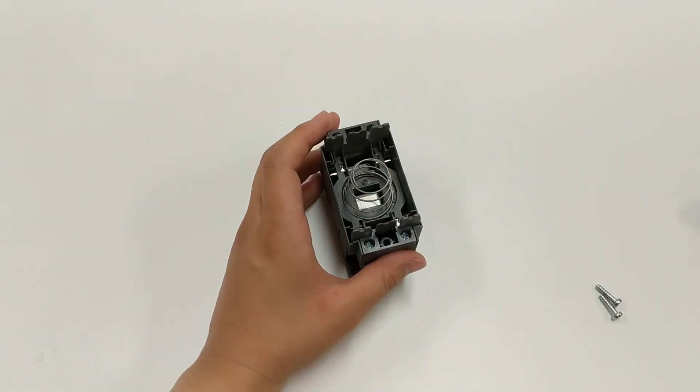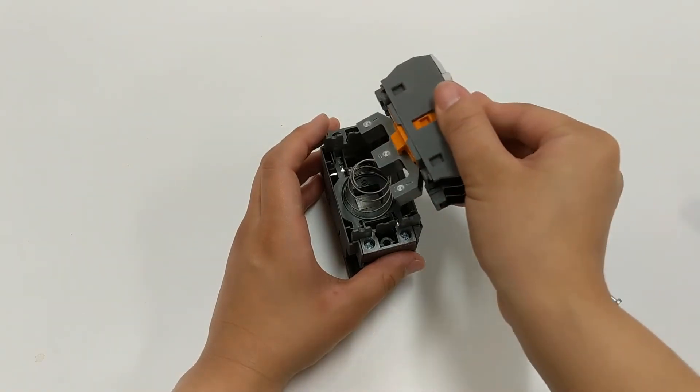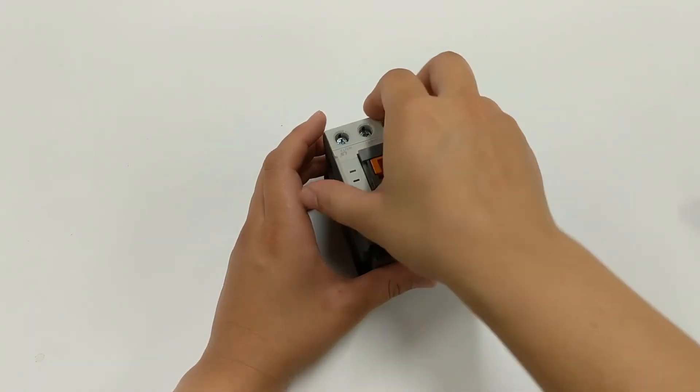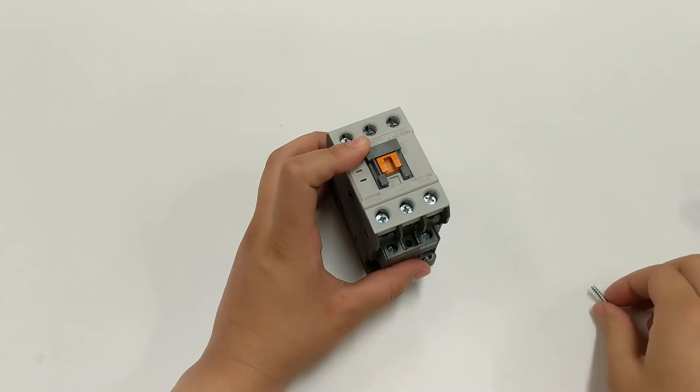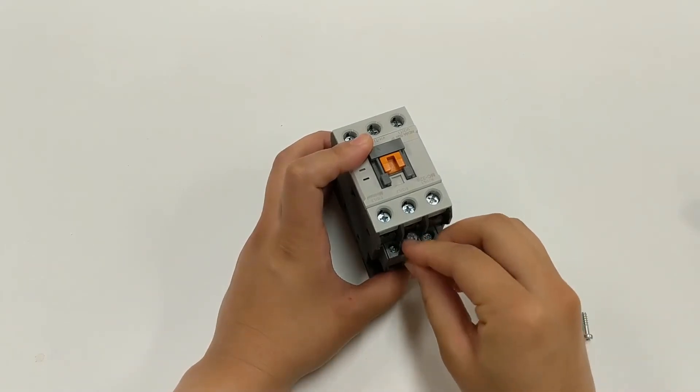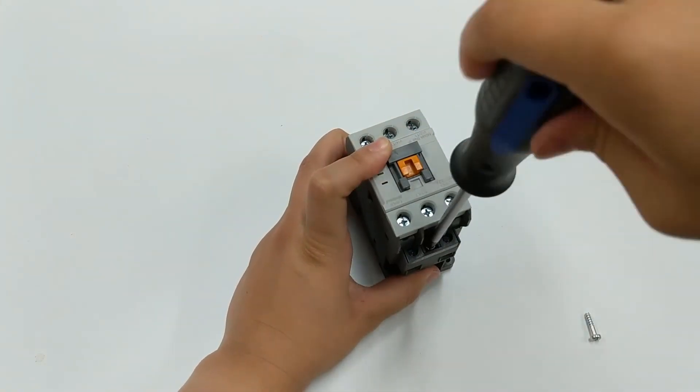Place the top half onto the bottom half. If the top half does not slide in, rotate the top 180 degrees and try again. Secure the contactor with the screws between A1 and A2 and replace any auxiliaries.